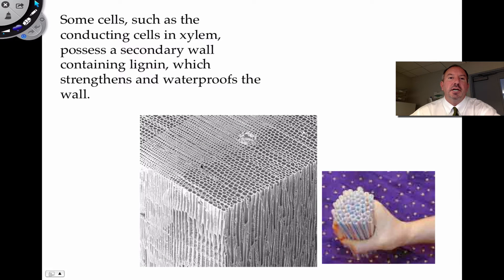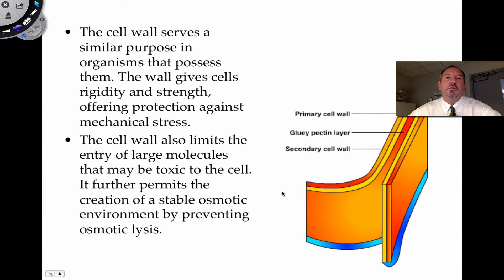Xylem cells have a secondary cell wall containing lignin, which is another sugar that helps strengthen and waterproof the cells. You can see the water going up — it's like a person holding straws, which is what it looks like when you look down at how water travels up these cells. The purpose of the cell wall is not only protection, rigidity, and strength, but it also protects against mechanical stresses a plant cell might endure and limits large toxic molecules from entering the cell.